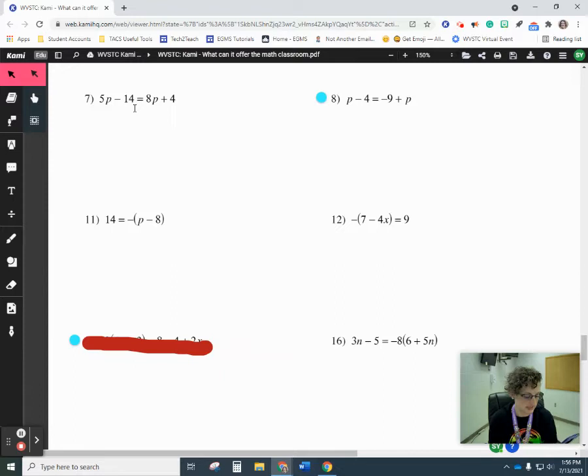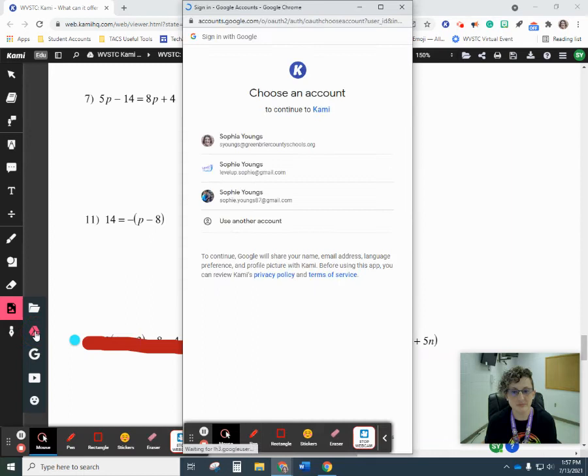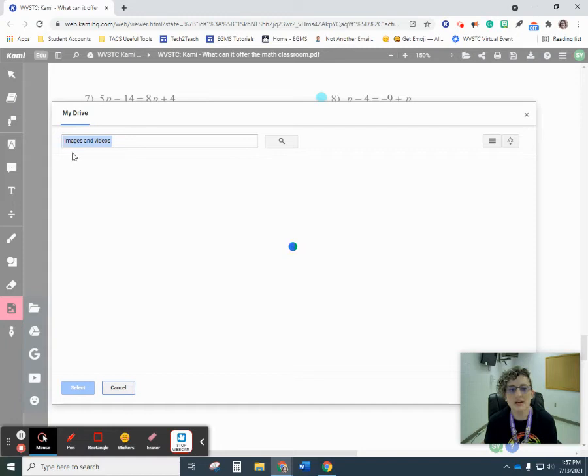And then what the kids will do is make sure they're in the right Google account. That's important. So then I'm going to go over here, which is the add media button. Click it. I'm going to add from my Google Drive. Make sure I'm in the right account, and it automatically is sorting through my images and videos.